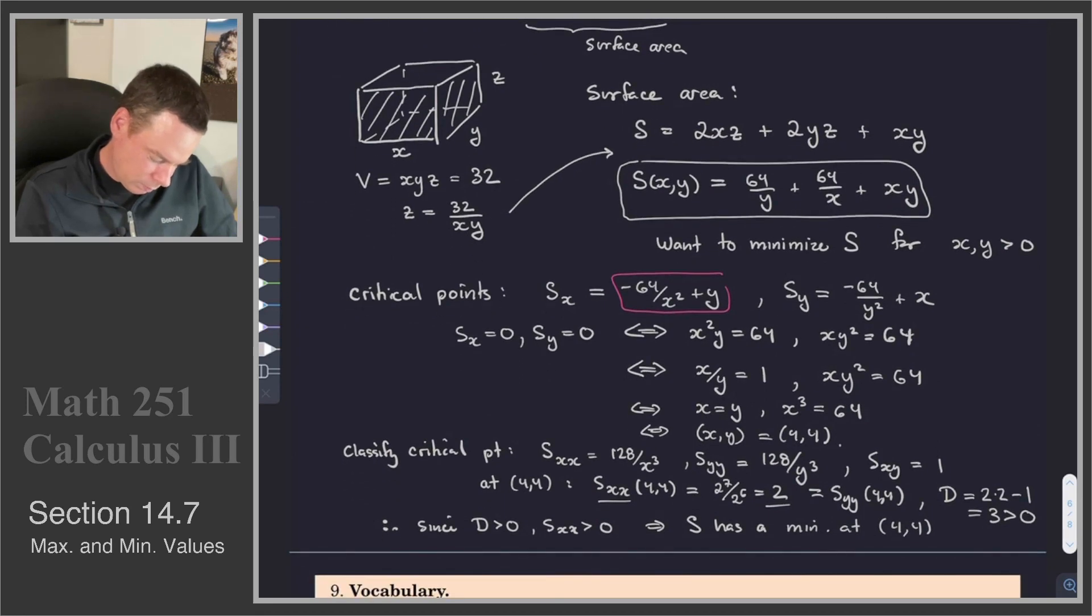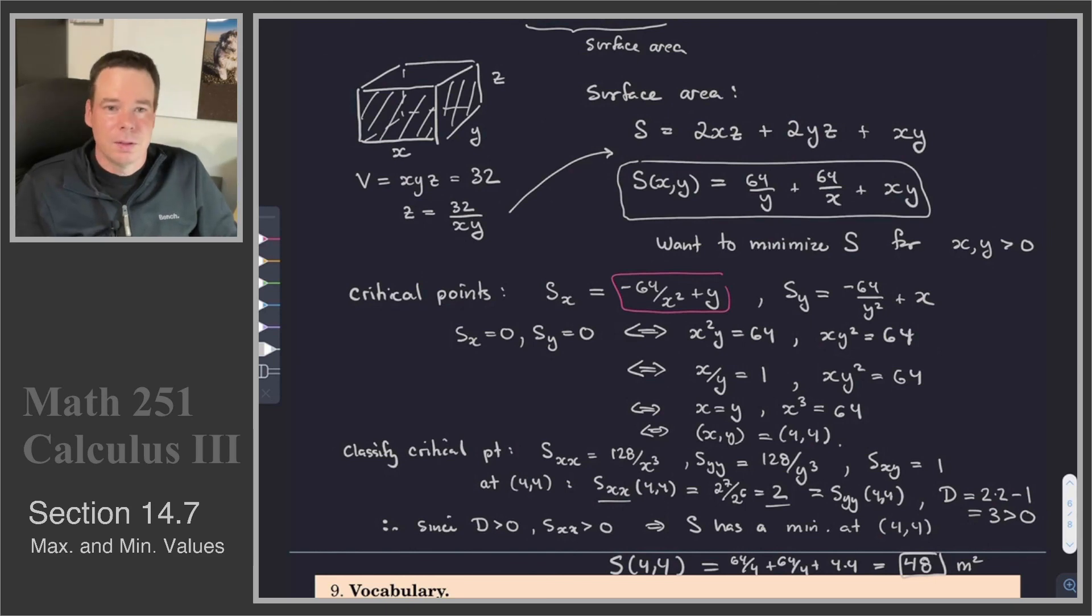What's its value? S at 4, 4 is equal to, so it's got a local minimum here. S at 4, 4, what is it? It's 64 over 4 plus 64 over 4 plus 4 times 4. So that's 16 plus 16 plus 16, or 48. So that's a surface area of 48 square meters. And so we found our minimum value, and it's 48 square meters.